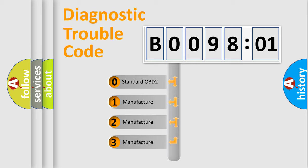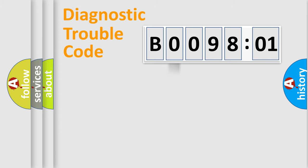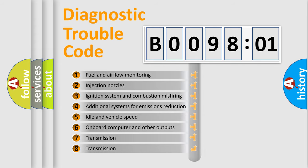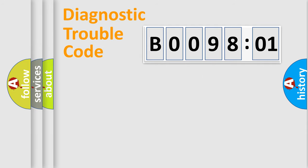If the second character is expressed as zero, it is a standardized error. In the case of numbers 1, 2, or 3, it is a manufacturer-specific error. The third character specifies a subset of errors. This distribution is valid only for the standardized DTC code.